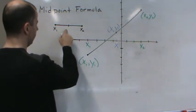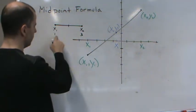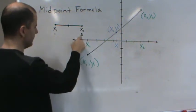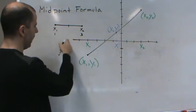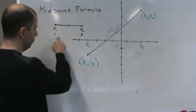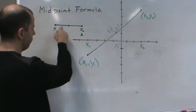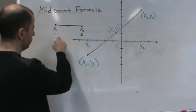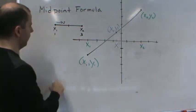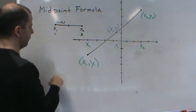If I want to find the middle — for example, if this is 1 and this is 3 — where's the middle? The middle is halfway between 1 and 3. You find the distance between the two and cut it in half. The distance between these two is 2, so you cut that in half and get 1. You add that half-distance to x1 to find the midpoint.